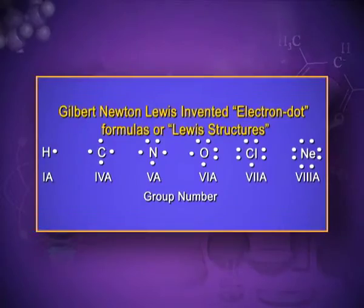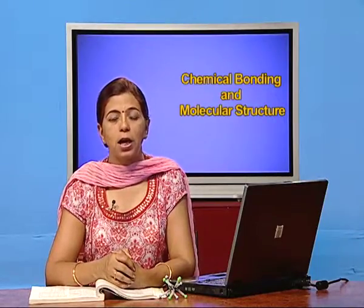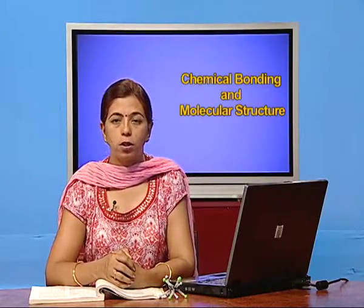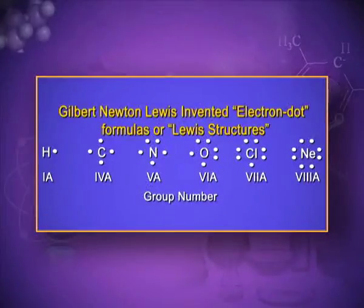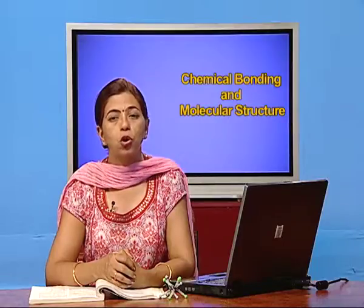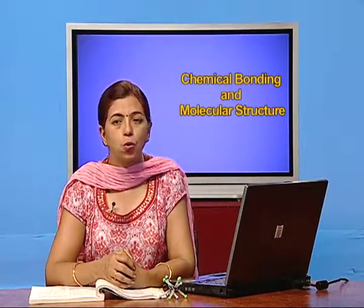The first group elements have only one electron in their valence shell, which will participate in chemical bonding. So we write the symbol of the element and put one dot — one dot means one electron. Similarly, the second group has two valence electrons, so we write the symbol of the element, for example beryllium, and show two dots representing the two electrons.